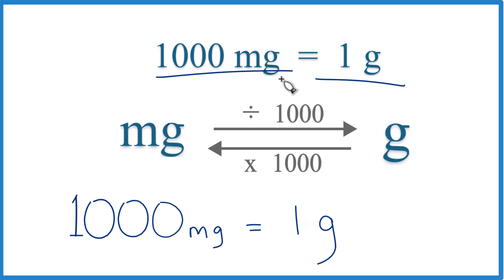You'll use this quite often to convert from milligrams to grams and grams to milligrams. So if you've got milligrams and you want to get to grams, you divide by 1,000. If you've got grams and you want to get to milligrams, you can multiply by 1,000.